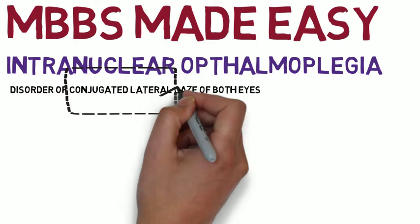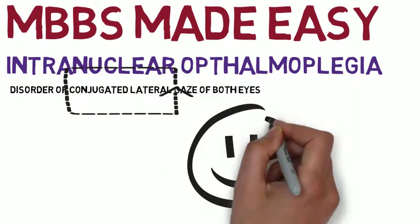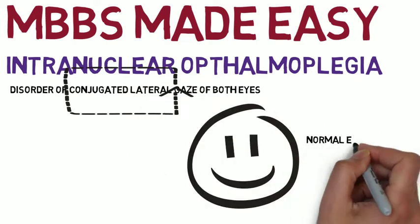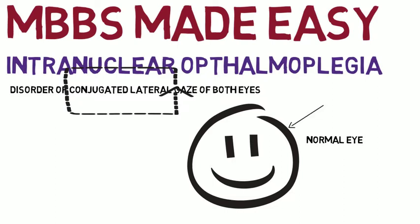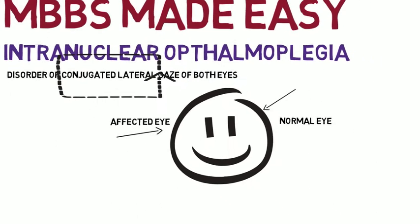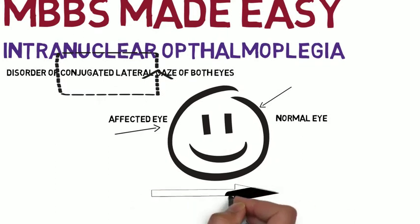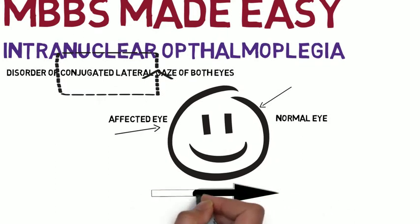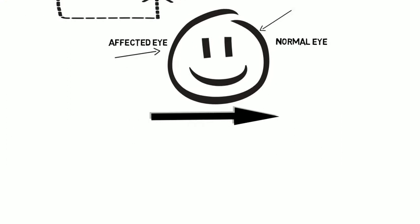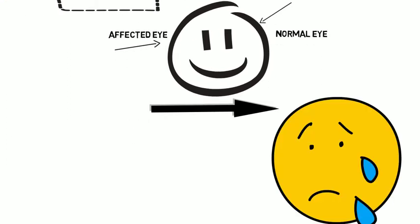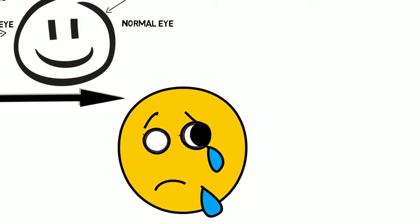So what does it mean by conjugated lateral gaze? Consider this is our normal eye and this is the affected eye. In order to see laterally, the right eye should adduct while the left eye should abduct. But what happens in intranuclear ophthalmoplegia is that the right eye fails to adduct while the left eye abducts normally.